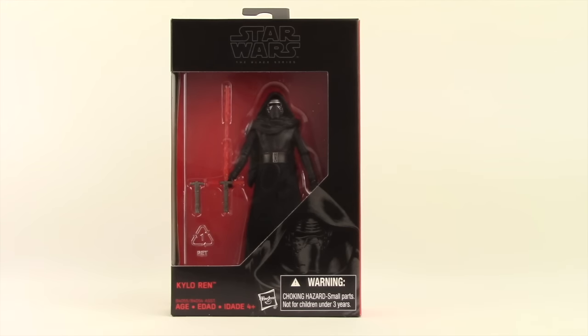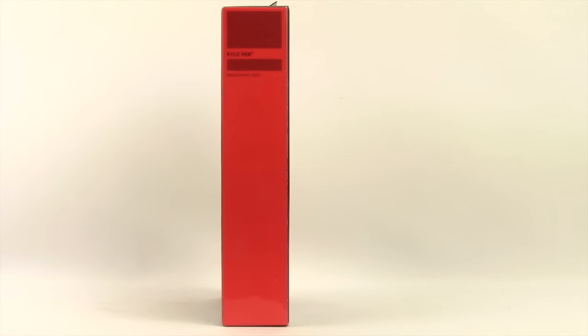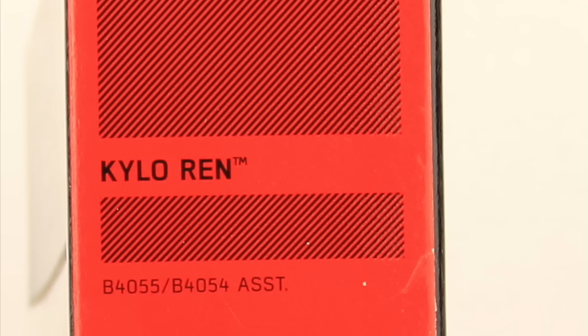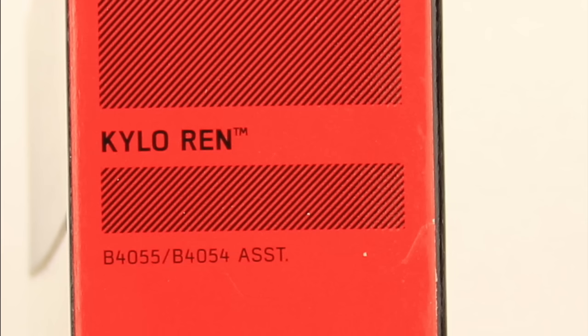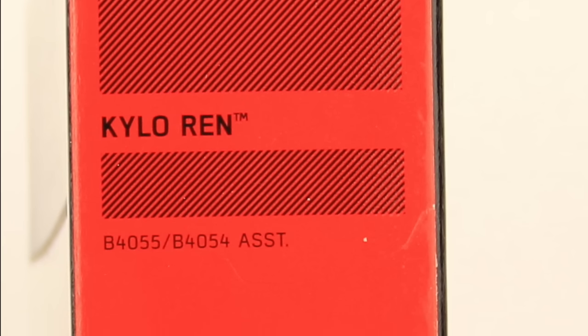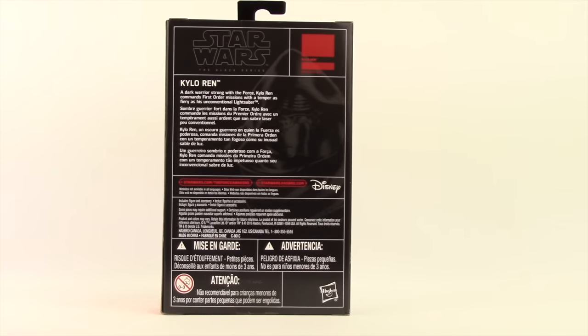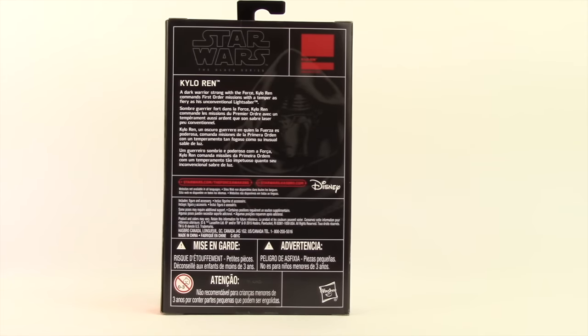This figure comes packaged in the same style of packaging that we're seeing with the 6 inch Black Series figures. You've got the black box, the red background, the figure clearly displayed. Down in the corner you have a blackened image of the character and the character's name. On the side we have just a red border and the name of the character. Unlike the 6 inch line where we have numbering, all we have here is an assortment number. They're not actually numbering the figures with this 3¾ inch line. On the back we have a brief bio in multiple languages.